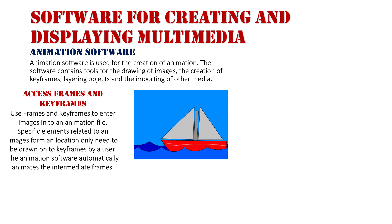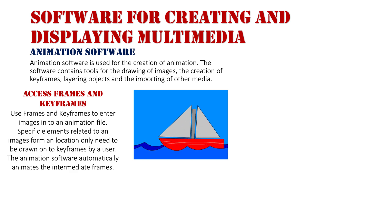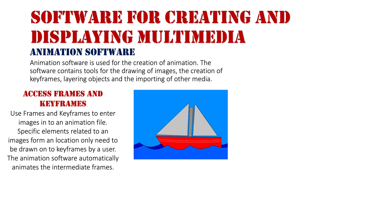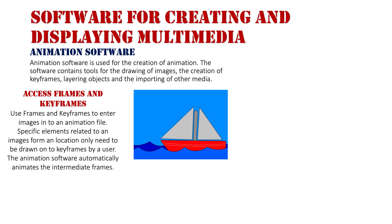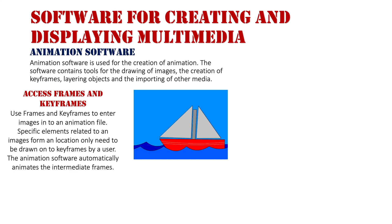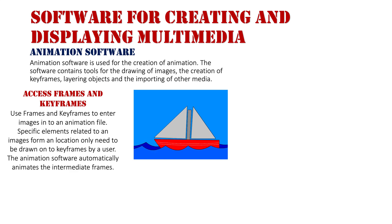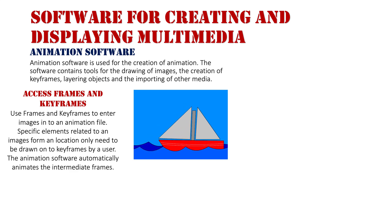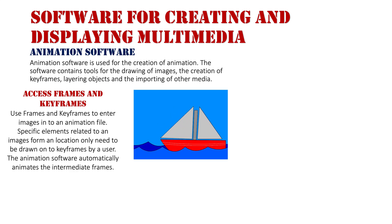Specific elements relating to an image's form and location only need to be drawn onto the keyframes by a user. This might be one every 10, 20, 30, or 50 frames depending on how much your objects are going to move and which way you specifically want items to be.